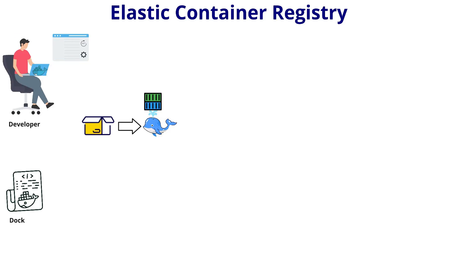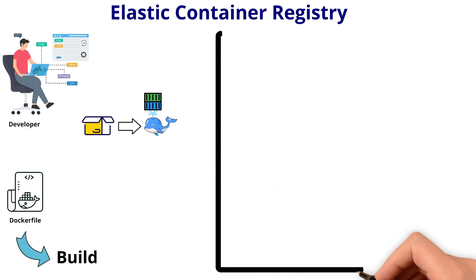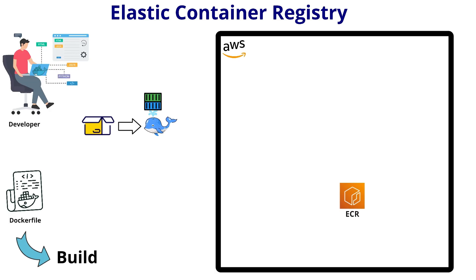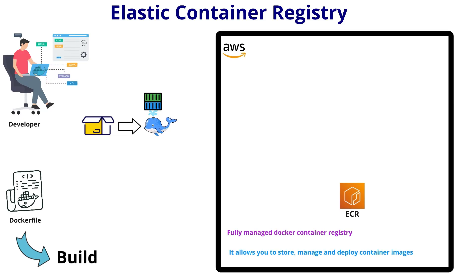Then he will be writing a Dockerfile. Once the Dockerfile is ready, he will be building a Docker image using that Dockerfile. Once he builds the Docker image, he needs a central, secure place to store and manage these images. That's where Amazon ECR comes into the picture. ECR is a fully managed Docker container registry offered by AWS. It allows you to store, manage, and deploy container images.